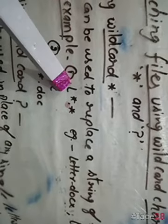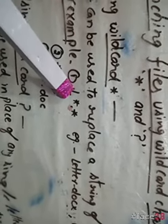The wildcard asterisk (*) can be used to replace a string of text in a search term — meaning any type and number of characters. For example, L*.* means the name should start with the letter L, followed by any number of characters, with any extension. Like 'letter.docx' — starting with L and any extension.